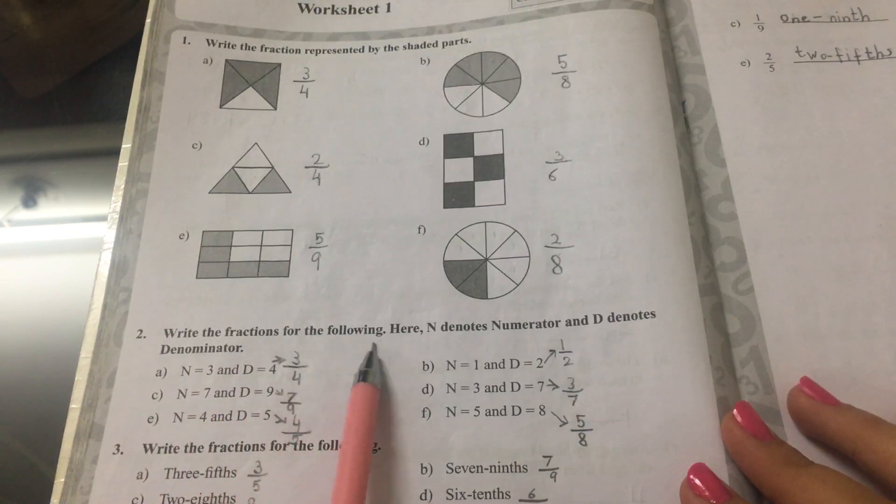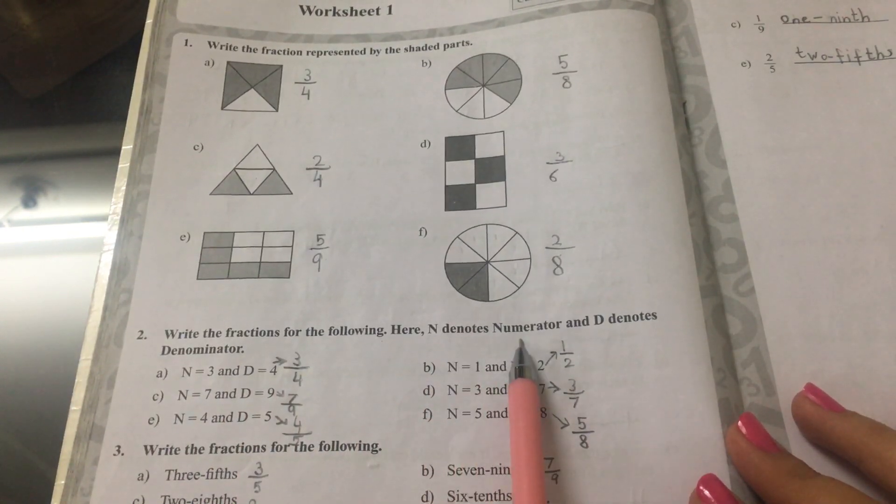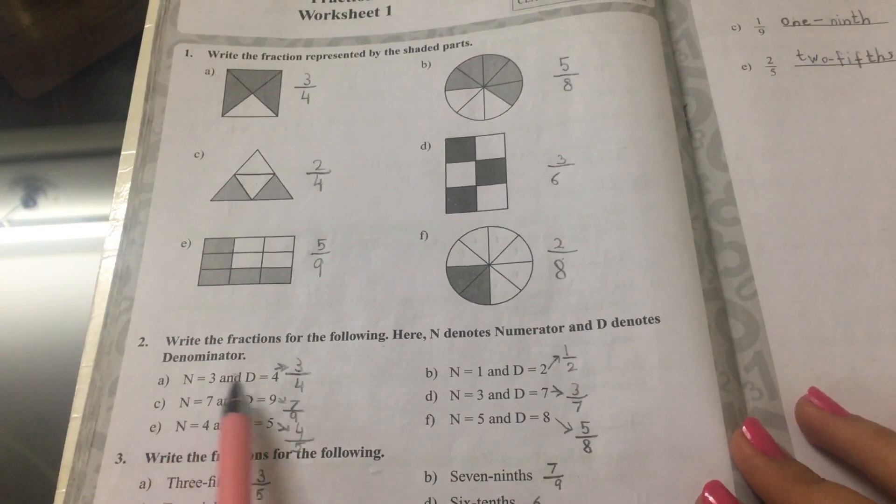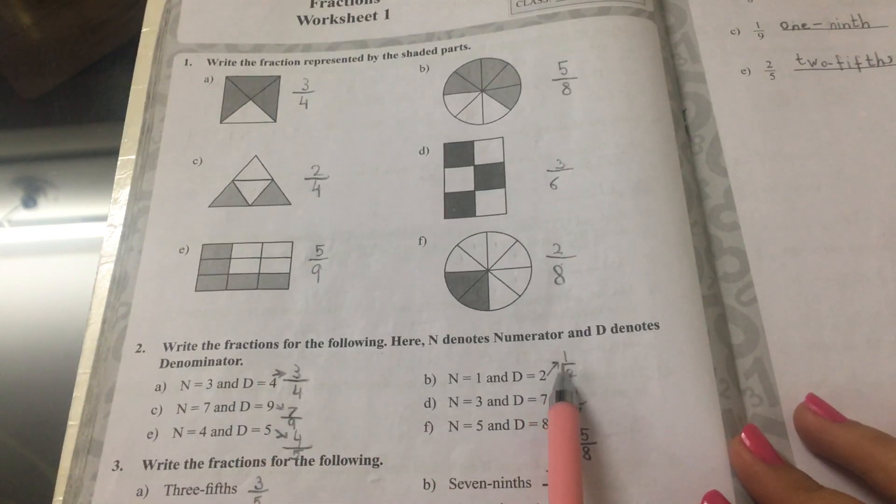Number 2. Write the fractions for the following. Here, N denotes numerator and D denotes denominator. A is equal to 3 fourths, B is equal to 1 half.